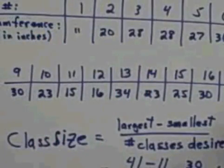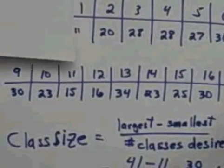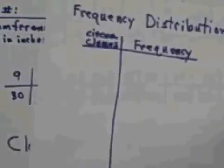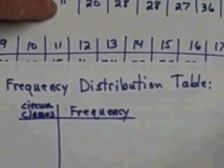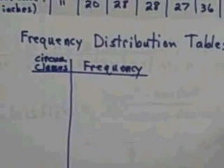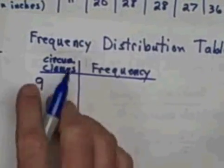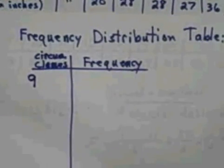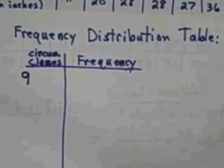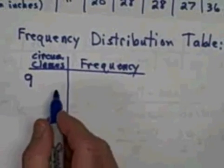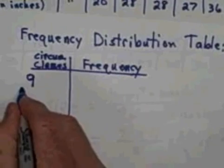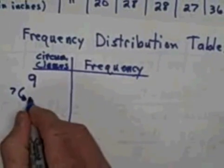All right, so we've decided that our classes are going to be at size 7, and we're going to have five of them. So that means that in order to make this fit nicely between 11 and 41, what we're going to do in this case is start with 9. So if my first class starts at 9, and the class is size 7, that means the next class must start 7 more, and must start at 16.